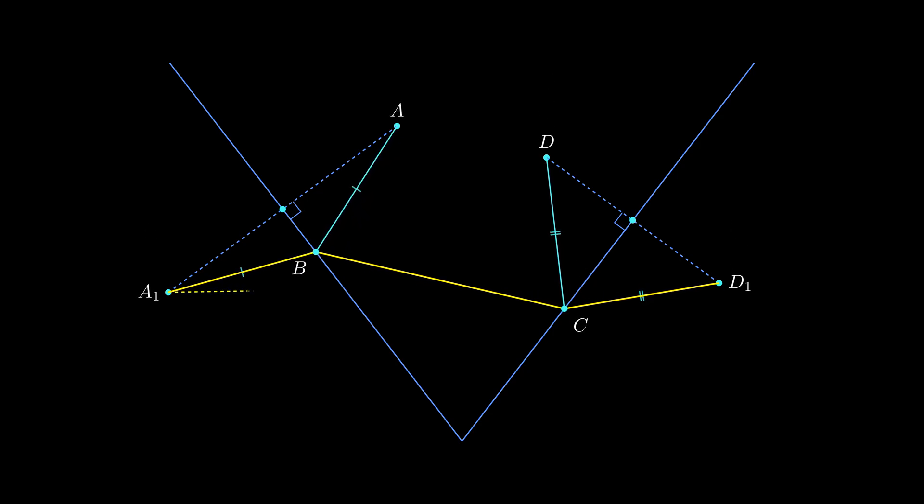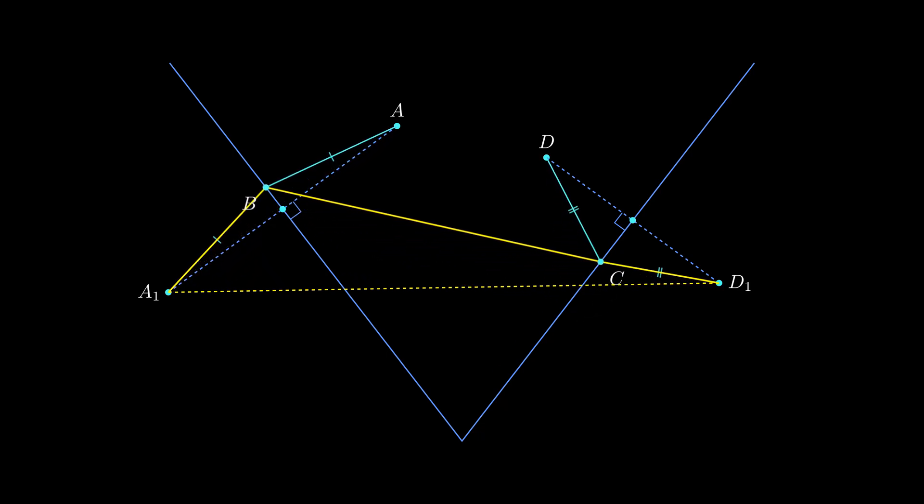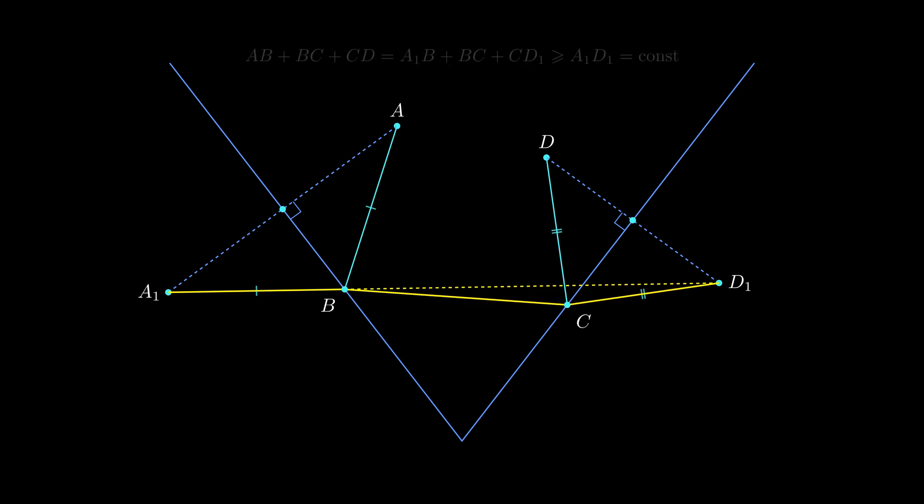The sum of the lengths of links isn't less than the length of the line segment that connects the endpoints of the polyline. But how do we reach the minimum? Where does inequality become equality? Only if the points B and C lie on the line segment A1D1. The problem is solved.